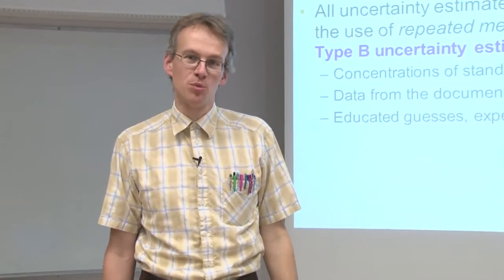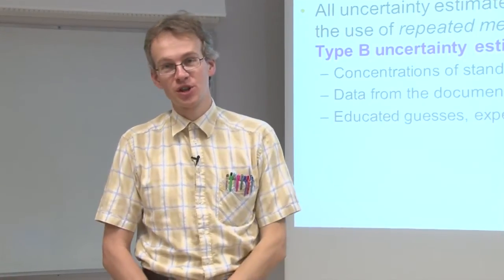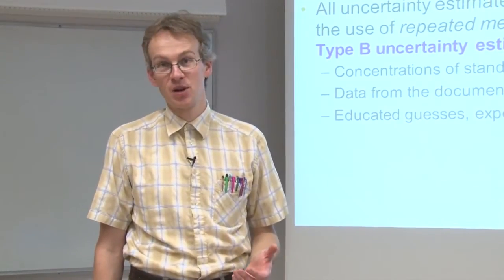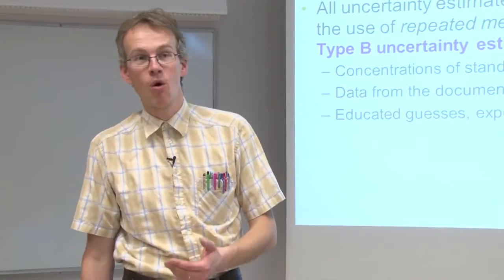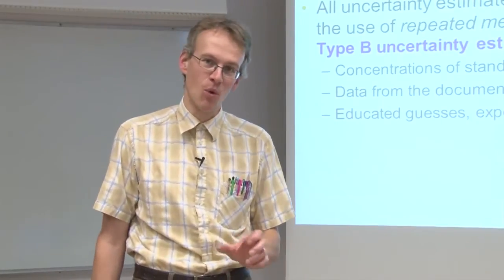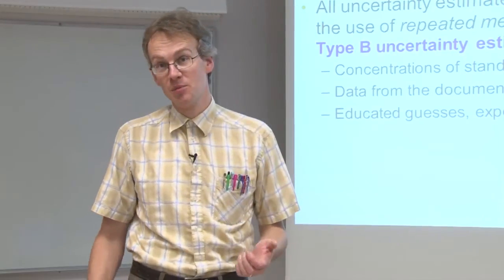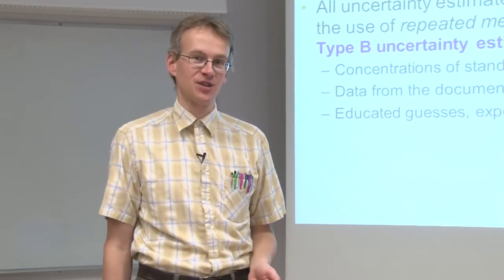So for example, a person working with a certain instrument during a long time can easily say that this instrument will not be off systematically by more than some magnitude. And this then would be called a B-type uncertainty estimate.